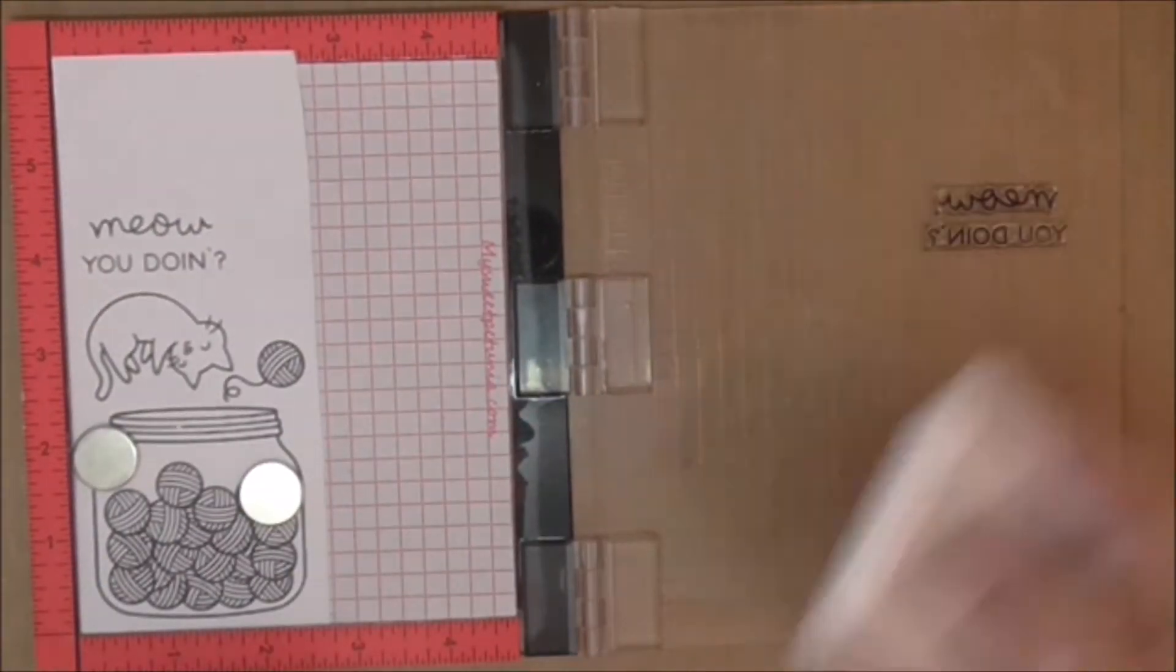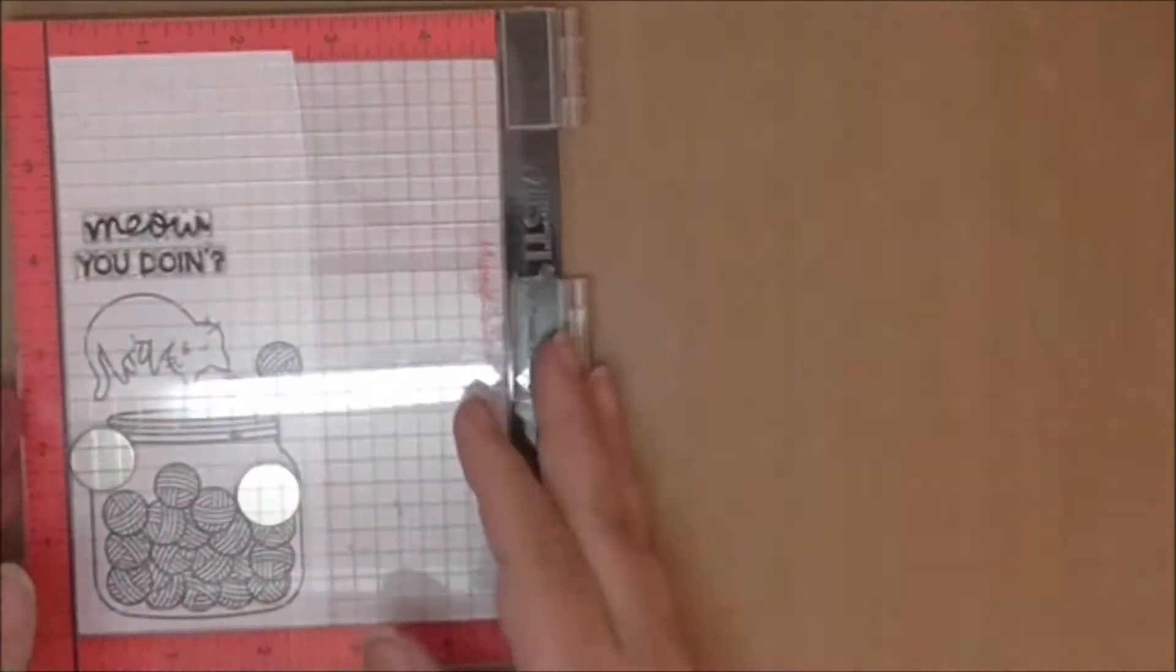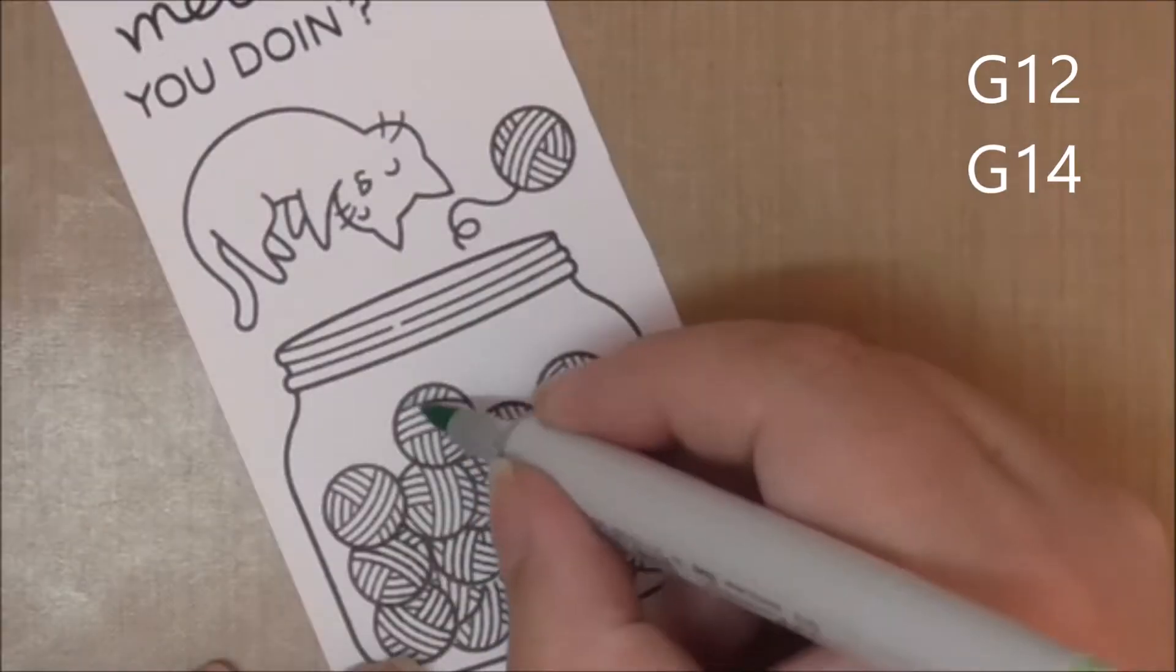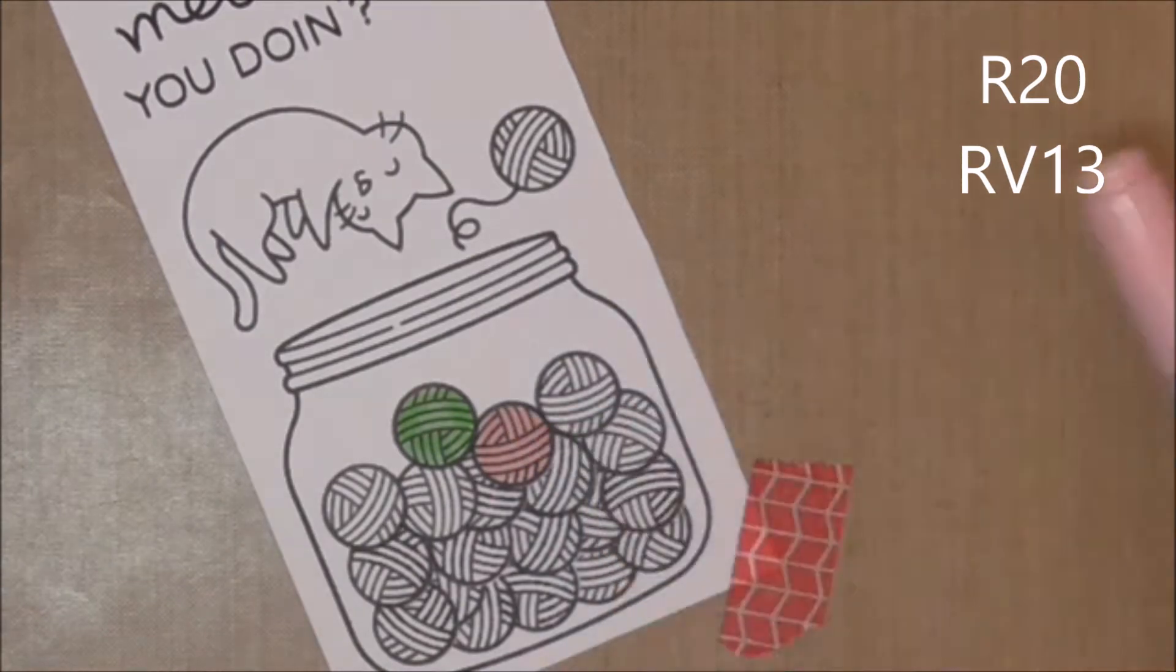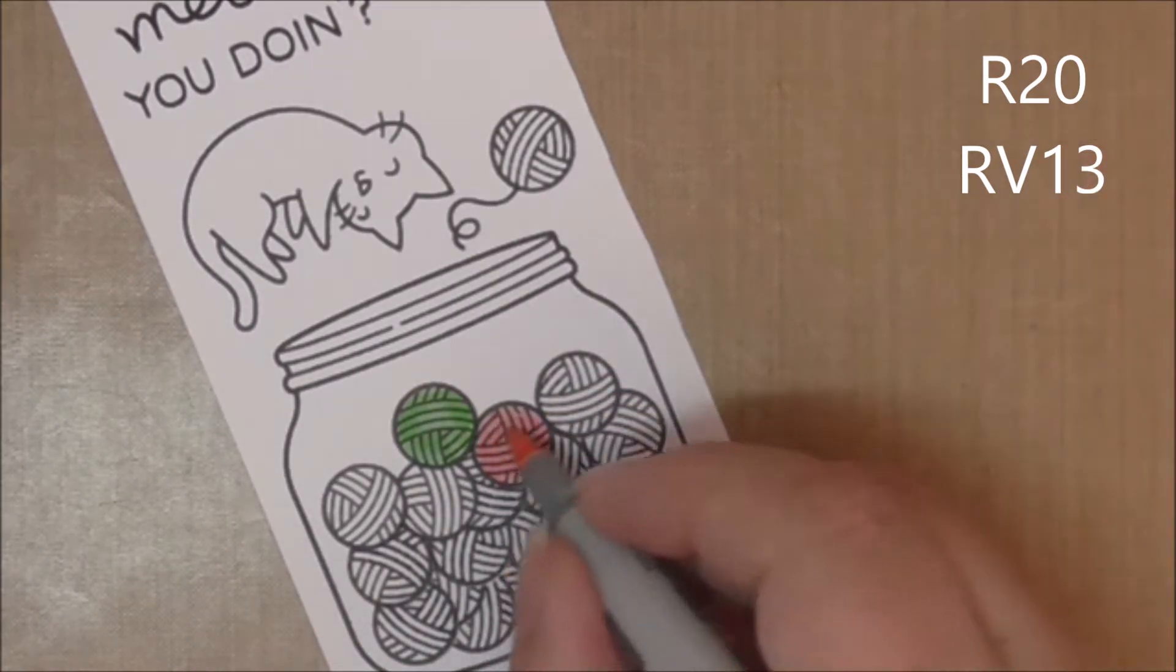I also decided to stamp my greeting on the blending card, stamped it in Memento, realized I needed it in Archival Jet Black because I'm not coloring that with Copics. And speaking of Copics, all the colors are listed up in the top right hand corner.